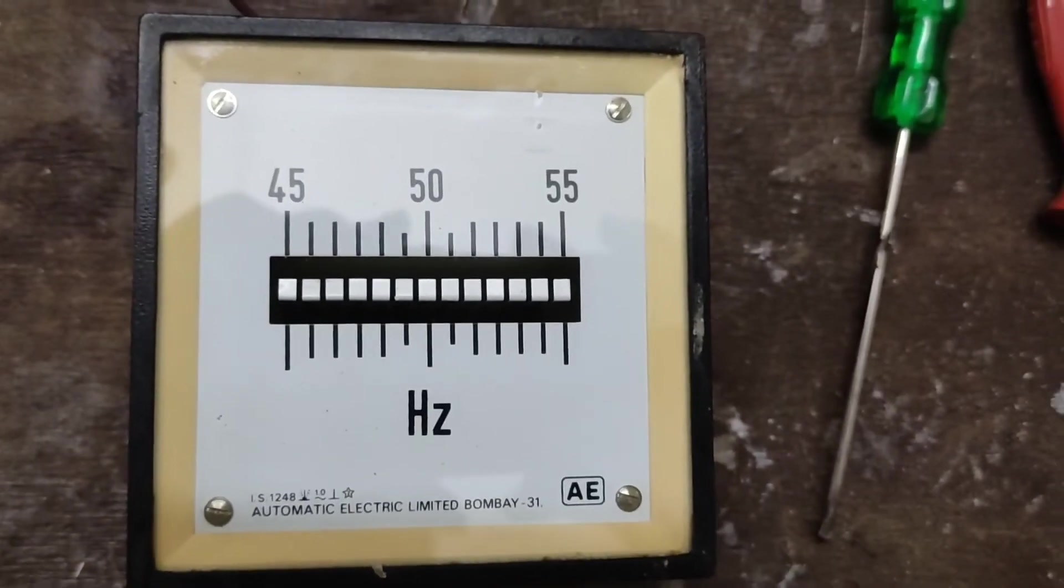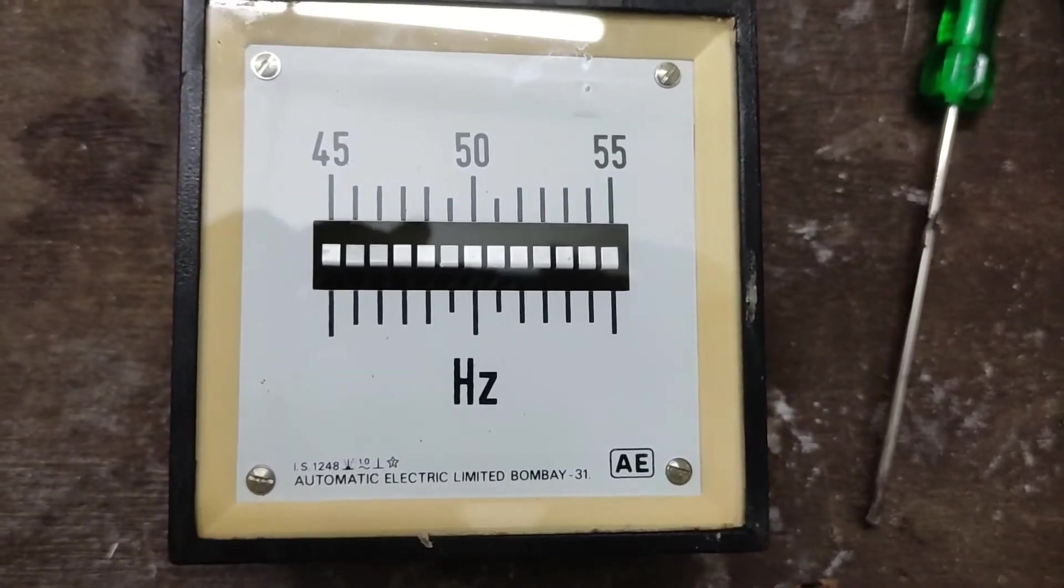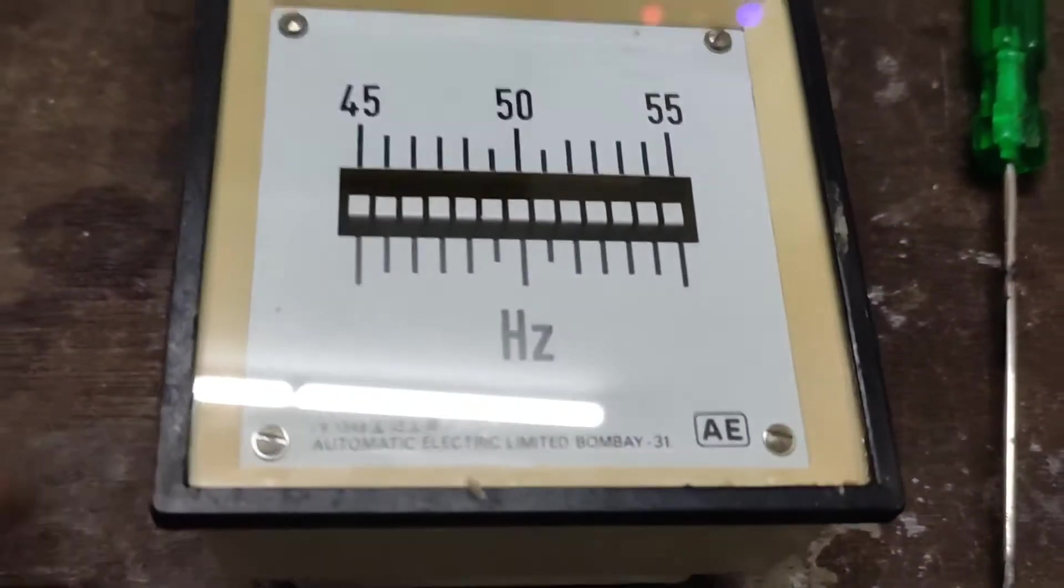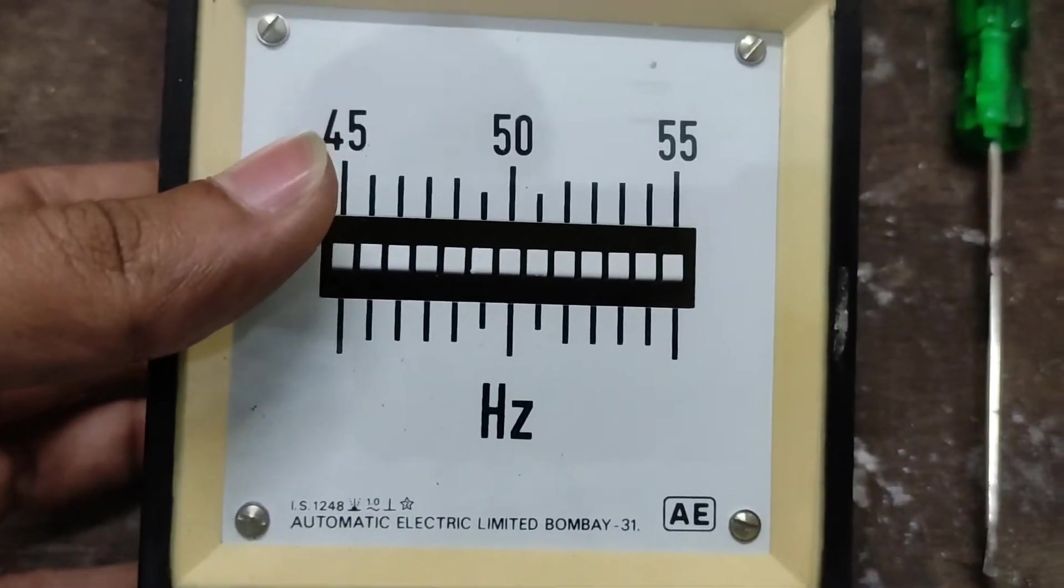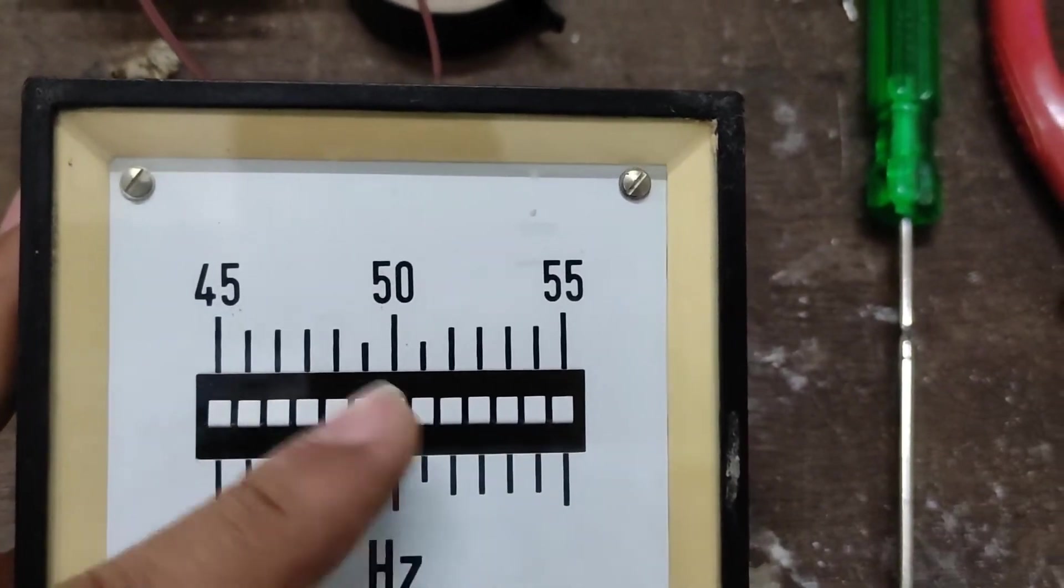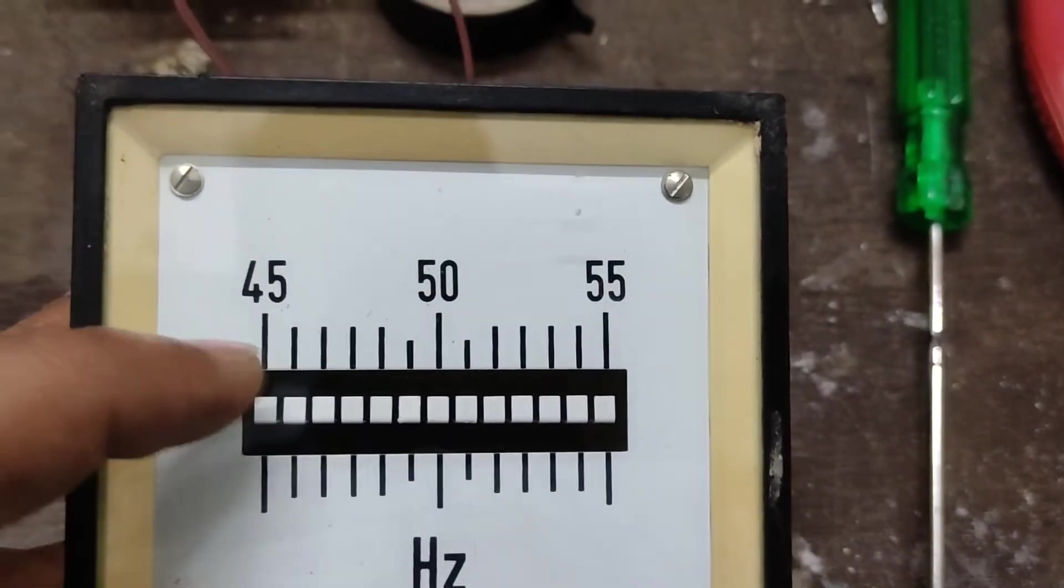Here's the unit out of the panel mount setup. The manufacturer name at the bottom is Automatic Electric Limited Bombay, an Indian company marked AE. For something more than 30 years old, this is in pristine condition.